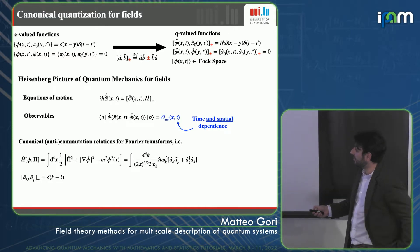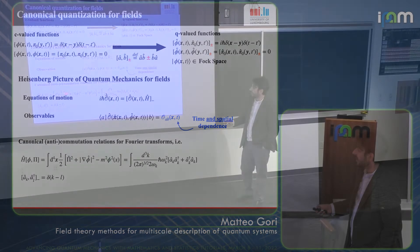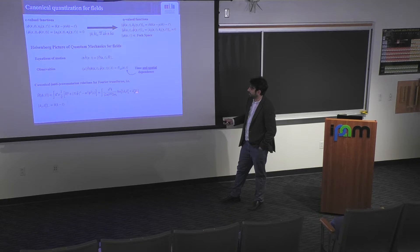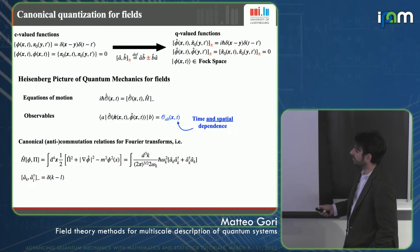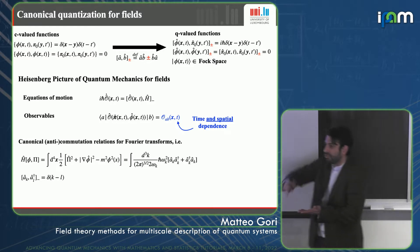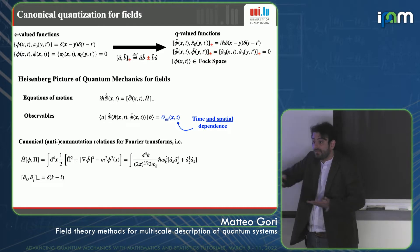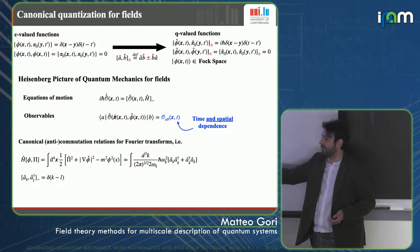When we promote the fields to operators, the coefficients of the Fourier expansion also become operators. For this simple free field with mass, the Hamiltonian takes the form of a collection of many harmonic oscillators. So a field can be thought of as an infinite collection of quantum harmonic oscillators.